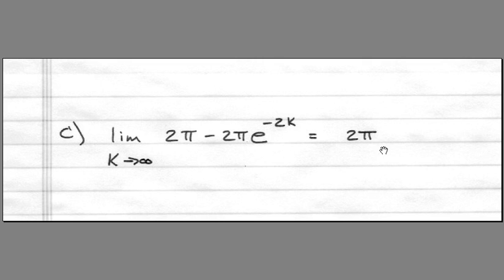So in the limit, as we take this x equals k out to infinity, our result becomes just 2 pi, and that concludes the exercise.